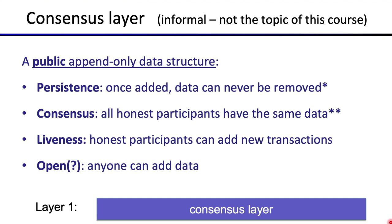Let's start with the consensus layer. Consensus is not the main topic of this course, so I'm going to go through this very fast. We'll just assume that a consensus mechanism exists and then put it to use. At a core level, consensus is about building a new capability: what's called an append-only data structure.